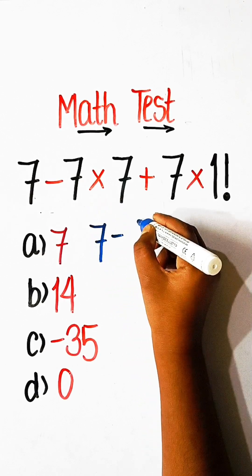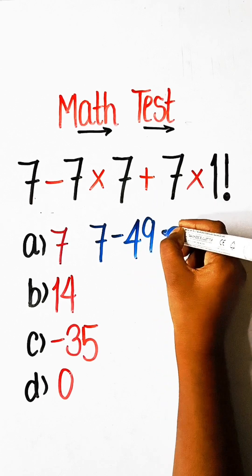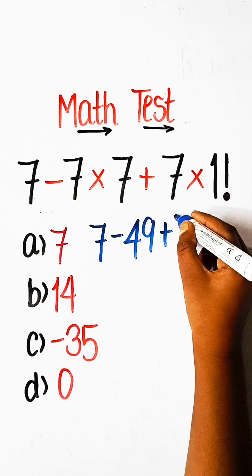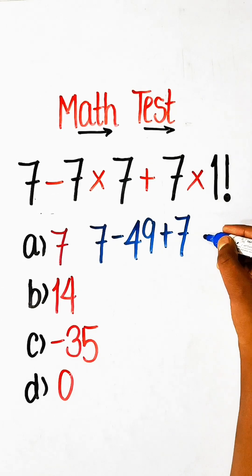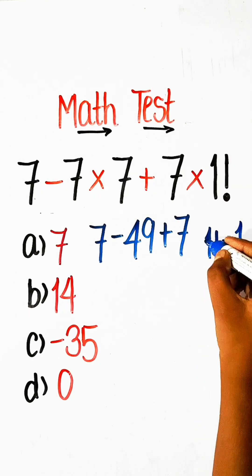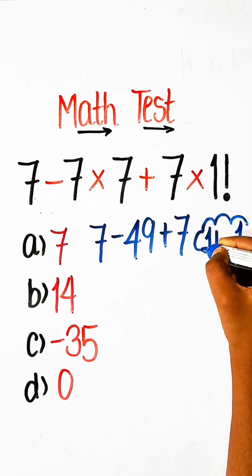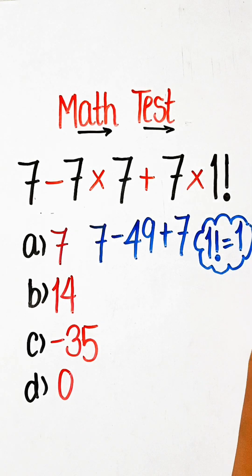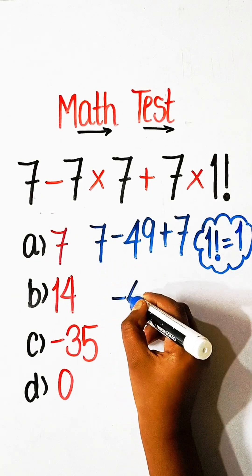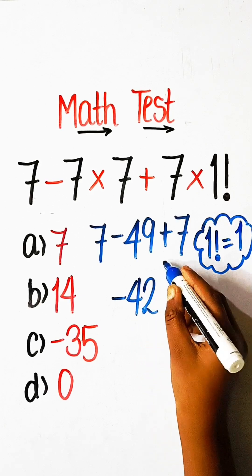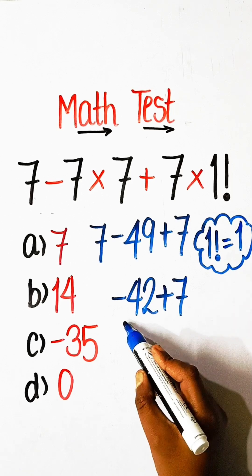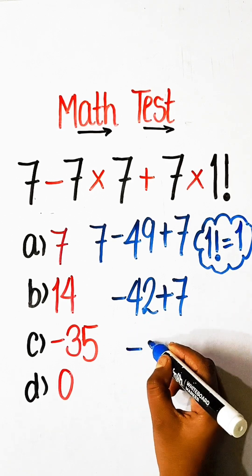We write: 7 minus 7×7, which is 49, plus 7 multiplied by 1 factorial. The value of 1 factorial equals 1, so that becomes 7 minus 49 plus 7. That gives minus 42 plus 7, which equals minus 35.